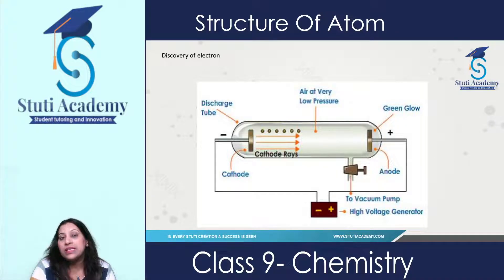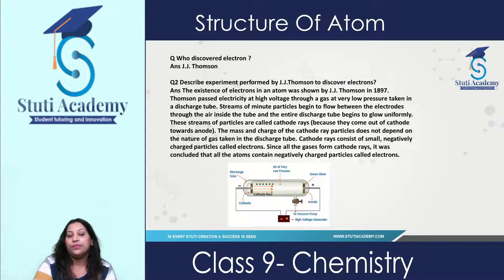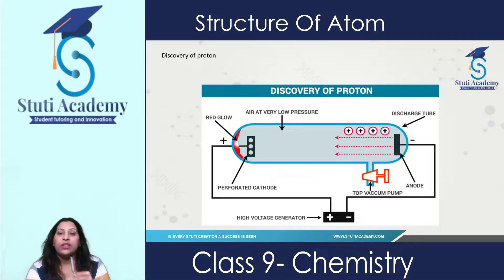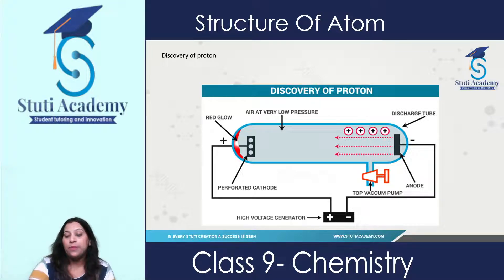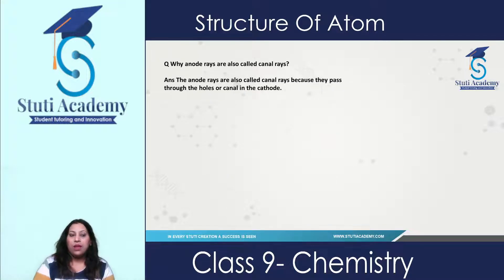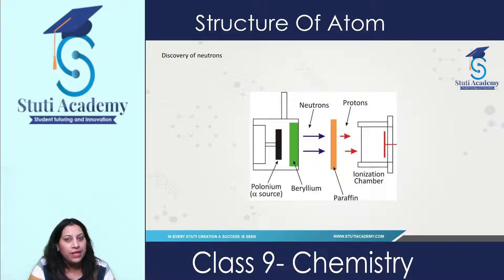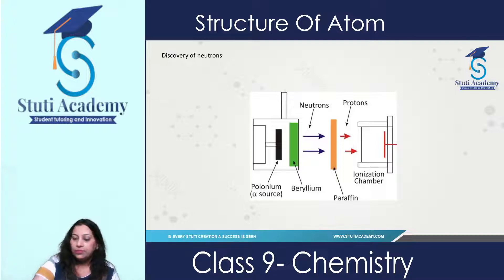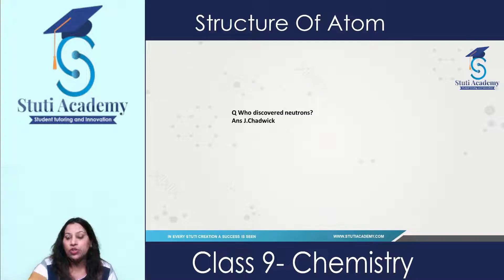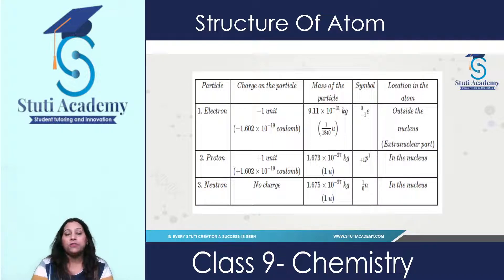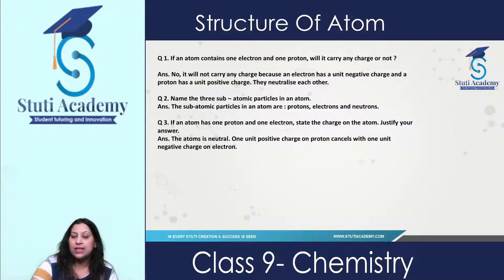We covered how electrons were discovered by J.J. Thomson, what questions are based on that topic, then how protons were discovered, then how neutrons were discovered, and what kind of questions can come in the exam. I hope you have revised those topics. We also discussed the differences between electrons, protons, and neutrons. This comparison table is very important and has already been discussed.